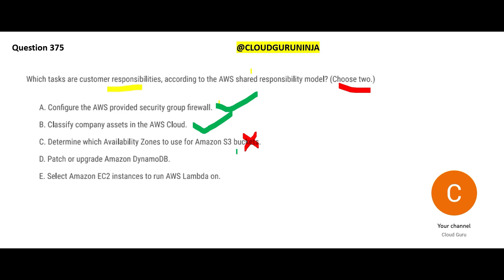Option D — patching or upgrading DynamoDB — is again AWS's responsibility, because DynamoDB is a managed service. Anything which is a managed service means AWS takes care of it; it falls in the AWS bucket, so AWS owns all patching and upgrading. Option E says you select EC2 instances to run AWS Lambda on. AWS Lambda is a serverless service. Beneath Lambda, even though it is serverless for the customer, it does use some compute — how it allocates that compute is done by AWS in the background, which you are not even aware of. So options A and B are my two answers.